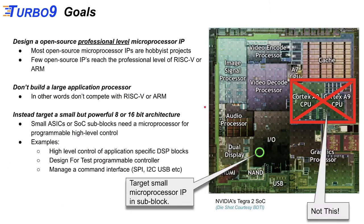The goal of our project is to design an open source professional level microprocessor IP. Most open source microprocessor IPs that you find on the internet are hobbyist projects. Very few of them reach the professional level of a RISC-V or ARM. We're not going to try to compete with RISC-V or ARM. Instead, we're going to try to target a small but powerful 8 or 16-bit architecture. It does fill a real niche.